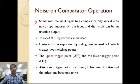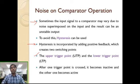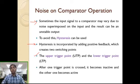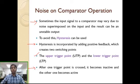The basic concept is that by using positive feedback on a comparator we can implement hysteresis. Hysteresis is incorporated by adding positive feedback, which creates two switching points. Instead of one reference point — as used in zero-level and non-zero level detectors — we now use two reference levels: UTP and LTP. After one trigger point is crossed, it becomes inactive and the other becomes active.